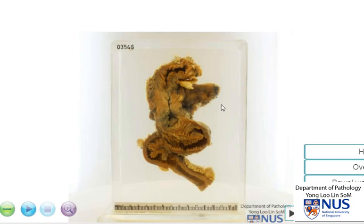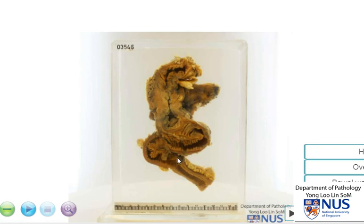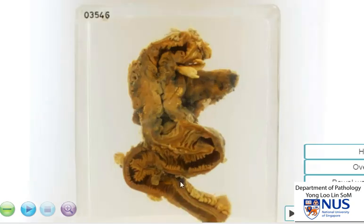This is the specimen of a bowel, and you can see that it includes the terminal ileum as well as the cecum and ascending colon. At first glance, it is quite abnormal in terms of the structure, and this is for several reasons.